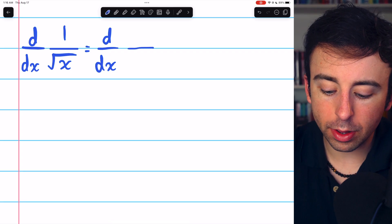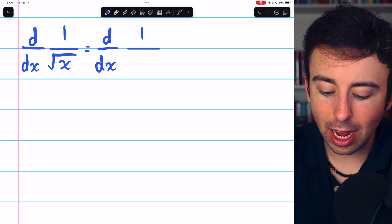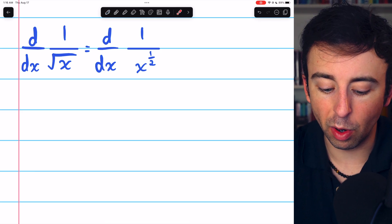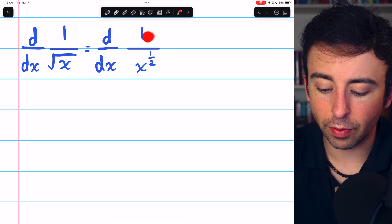In other words, 1 over the square root of x is the same as 1 over x to the power of 1 half. So, the derivative of this is the same as the derivative of this.